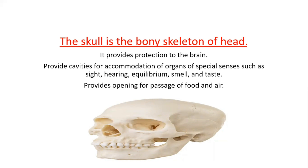The skull also provides cavities for accommodation of organs of special senses such as sight, hearing, equilibrium, smell, and taste — organs like the ear, tongue, eye, nose — for smelling, tasting, seeing, and hearing. It also provides openings for passage of food and air: the oral cavity or mouth for food, and the nasal cavity or pharynx for air.